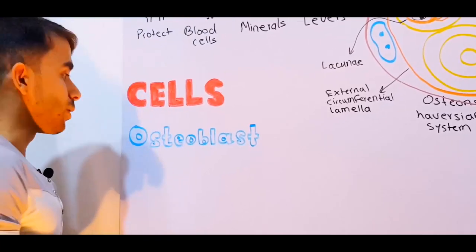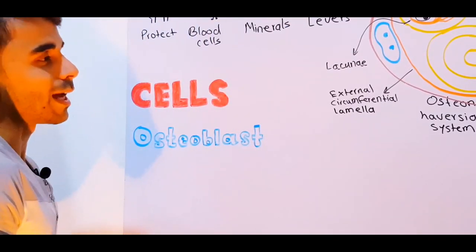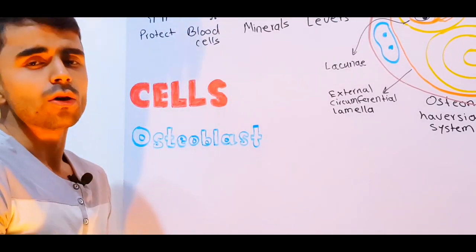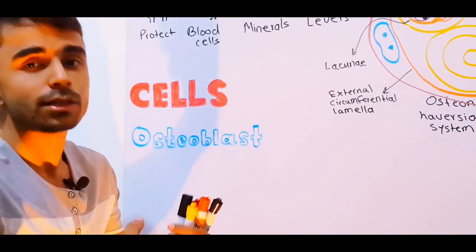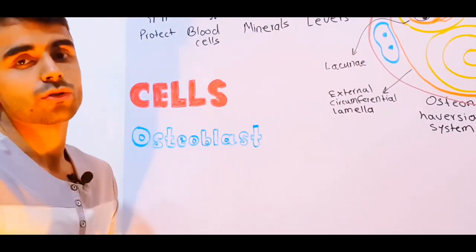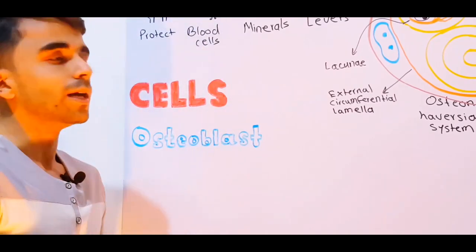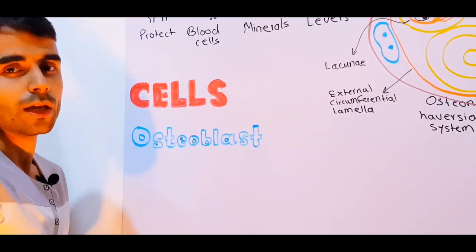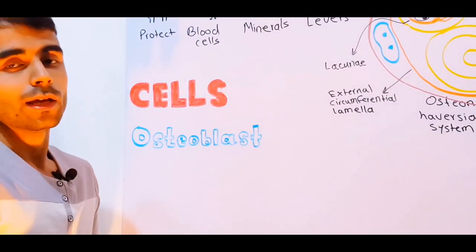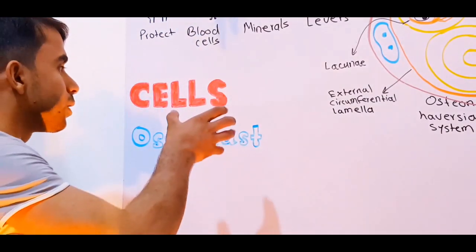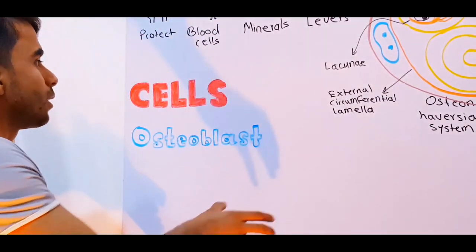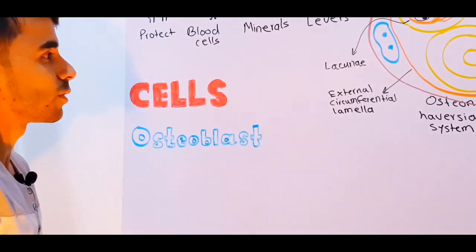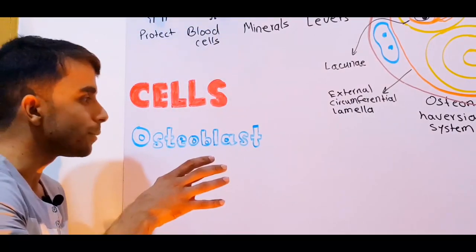We have three main types of cells: osteoblasts, osteocytes, and osteoclasts. There is also a fourth type called the osteoprogenitor cell, which is not an independent cell — it is a precursor stem cell that develops into any of the three, so we'll discuss it when we cover the matrix.